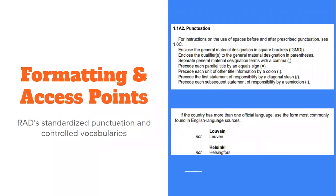One of the reasons the RAD document is so long is because it attempts to be a comprehensive, one-stop shop for archivists, containing its own controlled vocabulary and recommended punctuation for each element. To the right, you can see an example of a typical punctuation section, as well as an excerpt from the chapter on geographic names. Rather than link to outside thesauri like other standards, RAD provides its own preferred terms whenever possible.